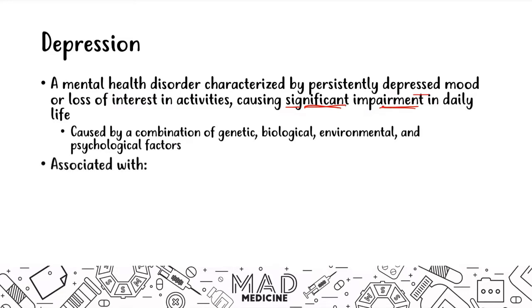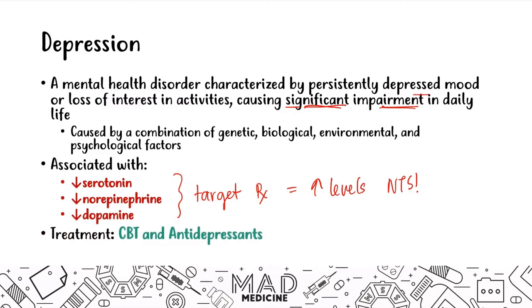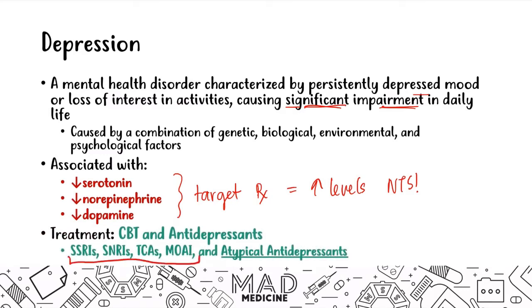Depression is associated with decreased levels of neurotransmitters, specifically serotonin, norepinephrine, and dopamine. The drugs we use target these neurotransmitters to increase their levels and treat depression. When it comes to treatment, you have cognitive behavioral therapy and antidepressants. We've already discussed four classes, so today we're focusing on atypical antidepressants — and there are six you need to know.